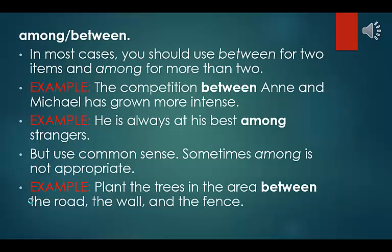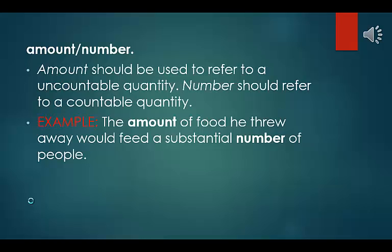Among vs. between: in most cases, use between for two items and among for more than two. Example: the competition between Ian and Michael has grown more intense. Example: he is always at his best among strangers. But use common sense — sometimes among is not appropriate. Example: plant the trees in the area between the road, the wall, and the fence. Amount vs. number: amount should be used to refer to an uncountable quantity; number should refer to a countable quantity. Example: the amount of food he threw away would feed a substantial number of people.